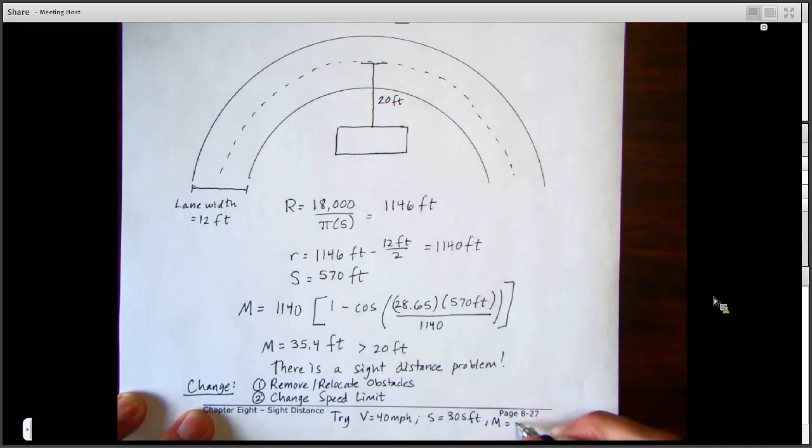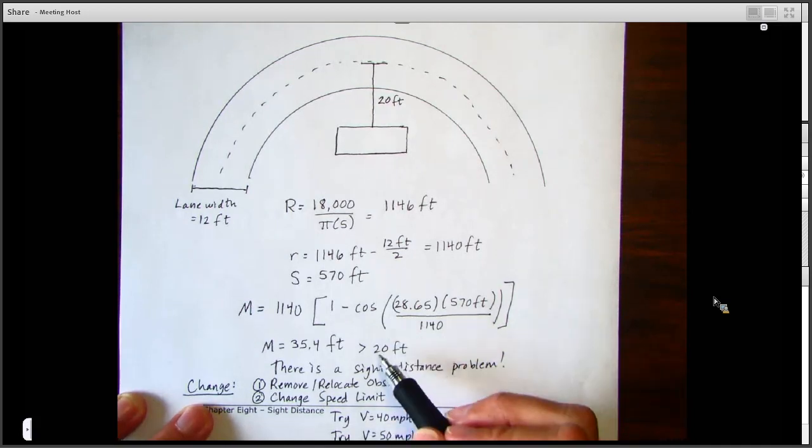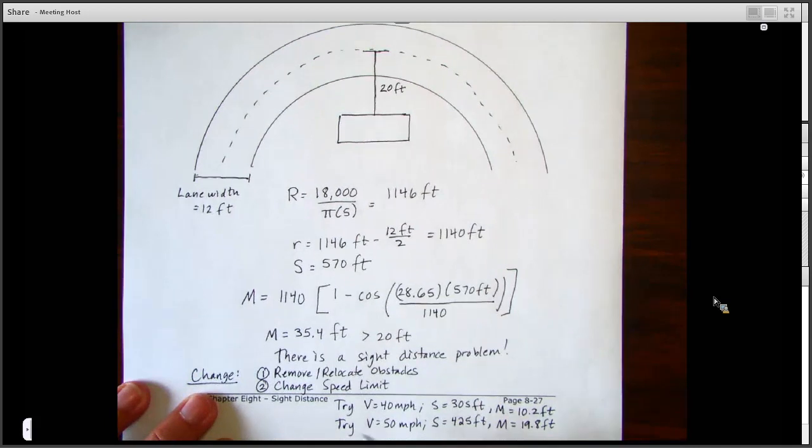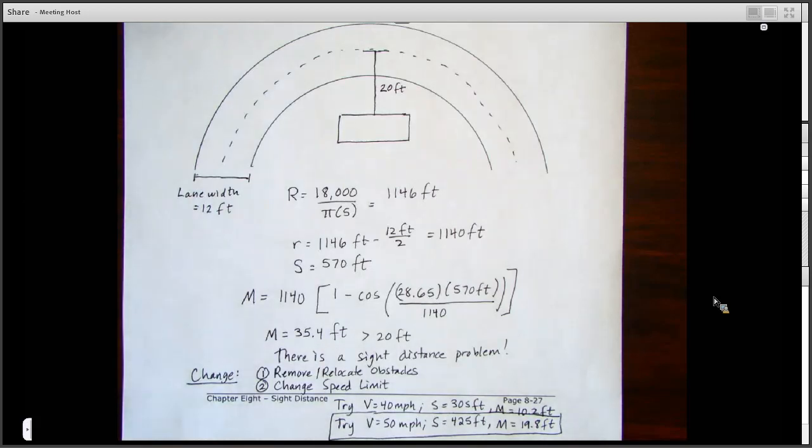Or you could even try a V of 50. That's still going to work too, which would get you an S of 425 feet, and then an M of 19.8 feet. So that's pretty nice. That gets us pretty close to the 20 feet, but still a little below it without having to reduce our speed so much. And the way you find those out is just trying those out and plugging in new values.